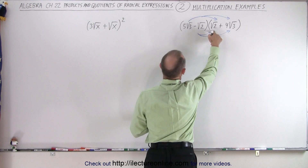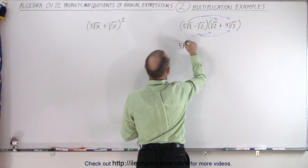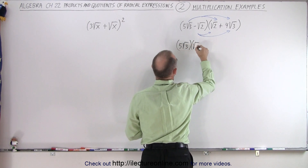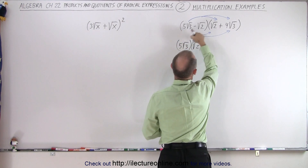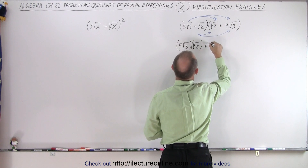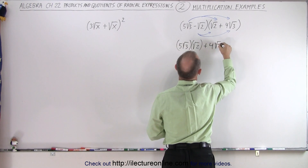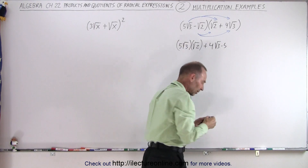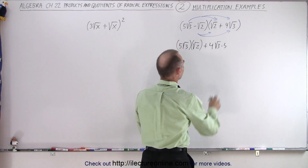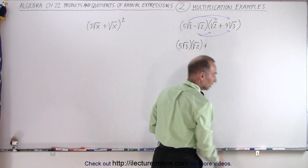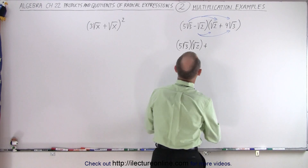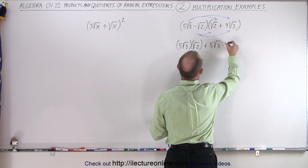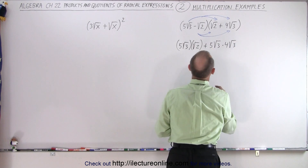This times this gives us five times the square root of three multiplied times the square root of two. Then this times this gives us plus four times the square root of three times five — actually, let's keep the same order — so we have five times the square root of three times four times the square root of three.